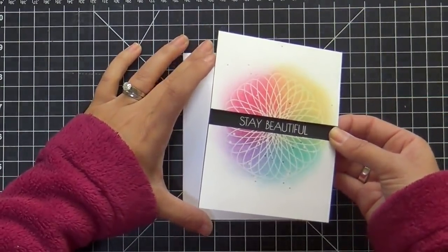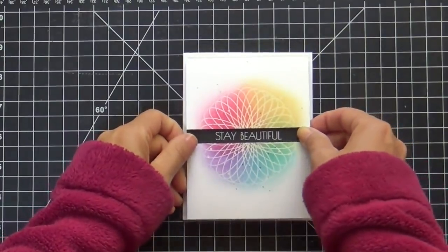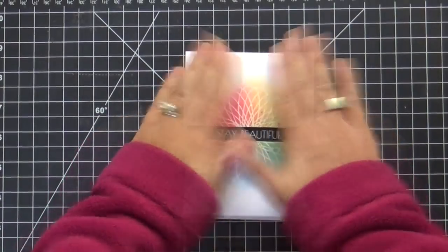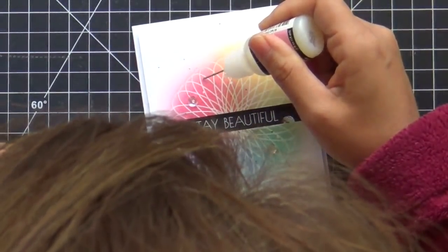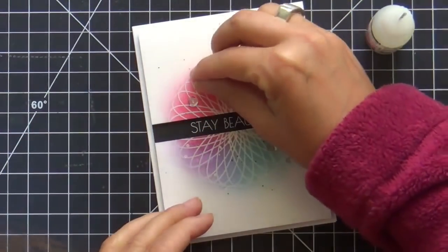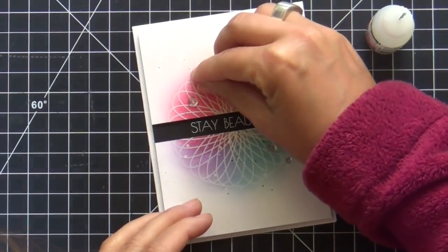I'm just finishing this off, assembling everything, popping up my geometric panels, and then popping up the whole panel onto a card base. To finish it off, a few sparkling clear sequins, and this card is done.